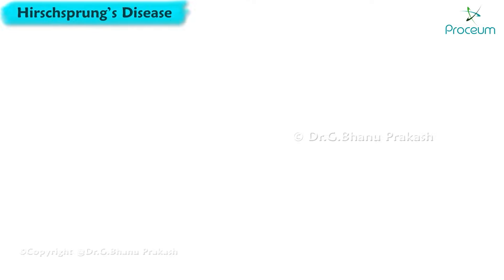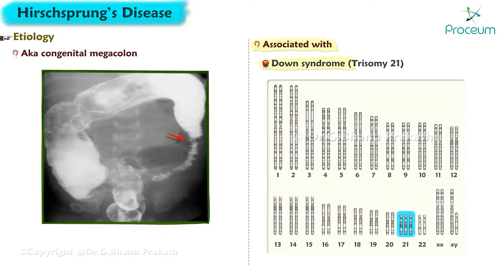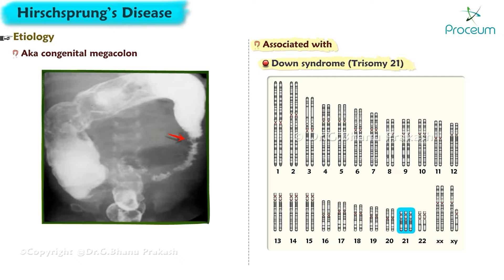Hirschsprung's disease, also known as congenital megacolon, is associated with Down syndrome, caused by Trisomy 21, and is also connected to RET gene mutations.